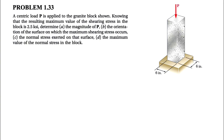Welcome to the channel. We're going to be solving question 33 from the first chapter of the Barron-Johnson textbook. We have a centric load P applied to the granite block, and we know that the resulting maximum value of the shearing stress in the block is 2.5 KSI. So the first given is the maximum shearing stress, which is 2.5 KSI.